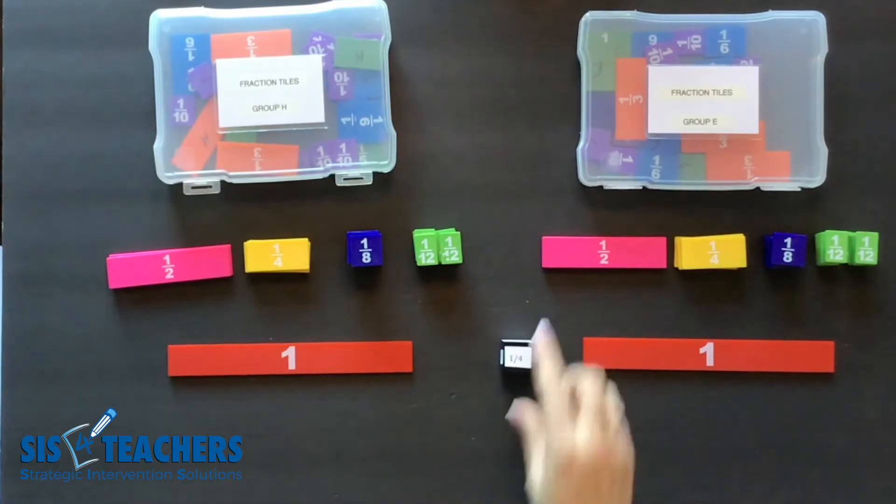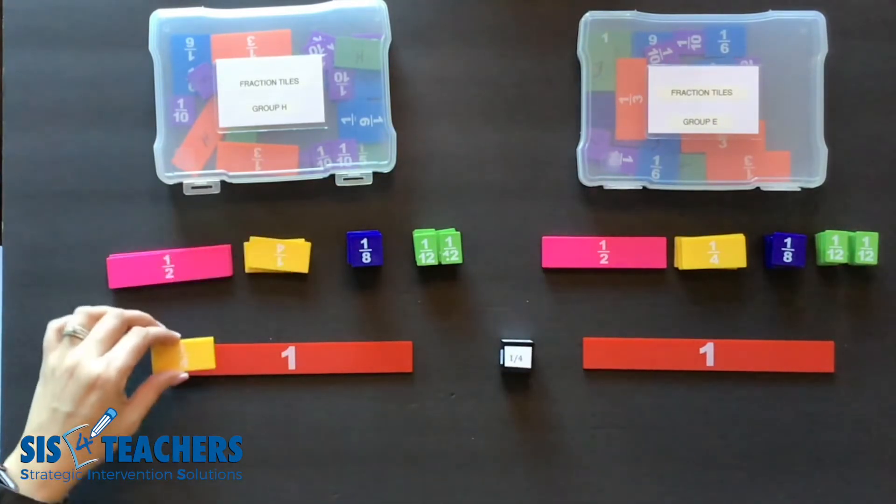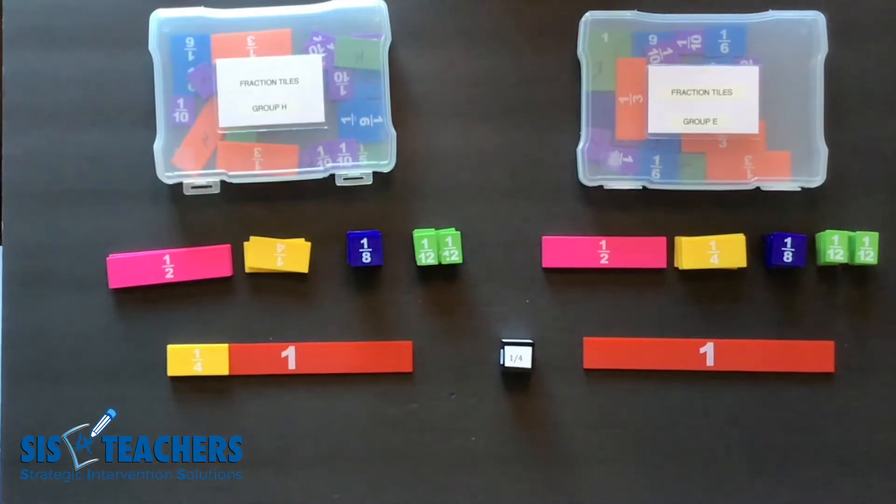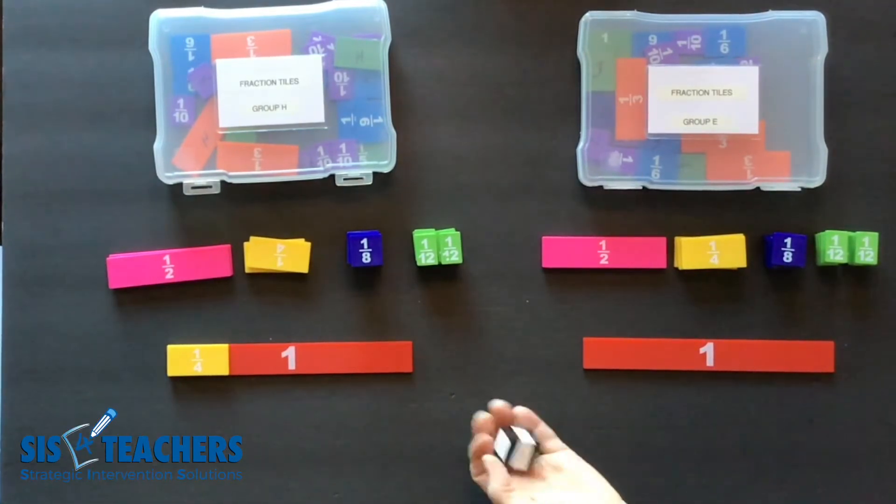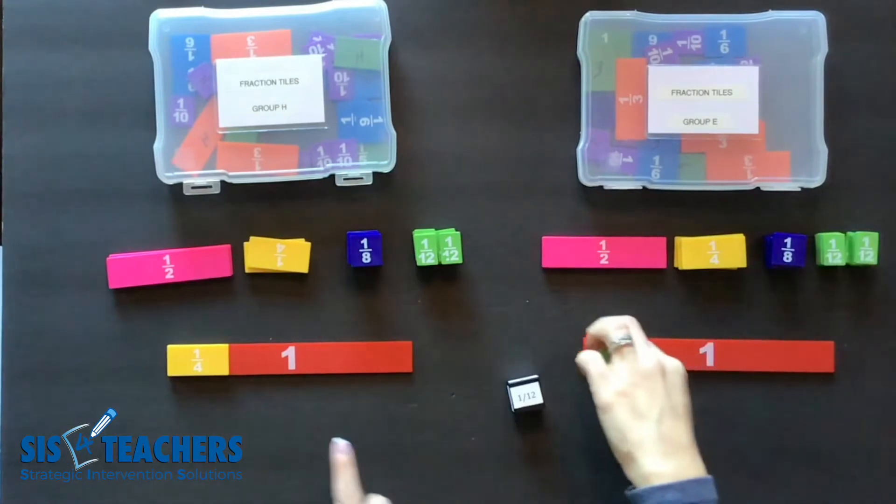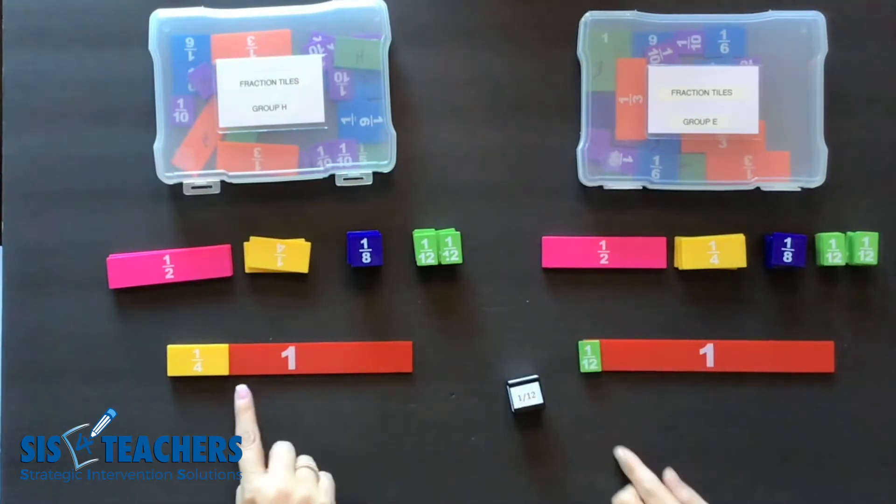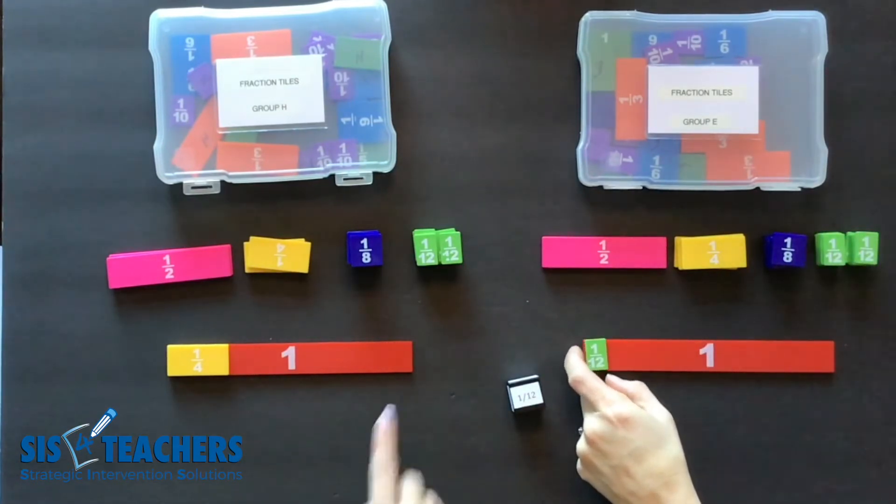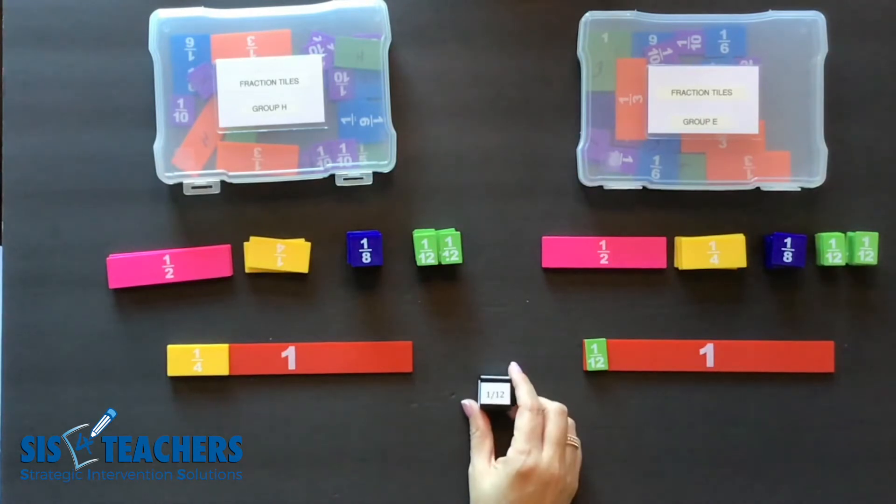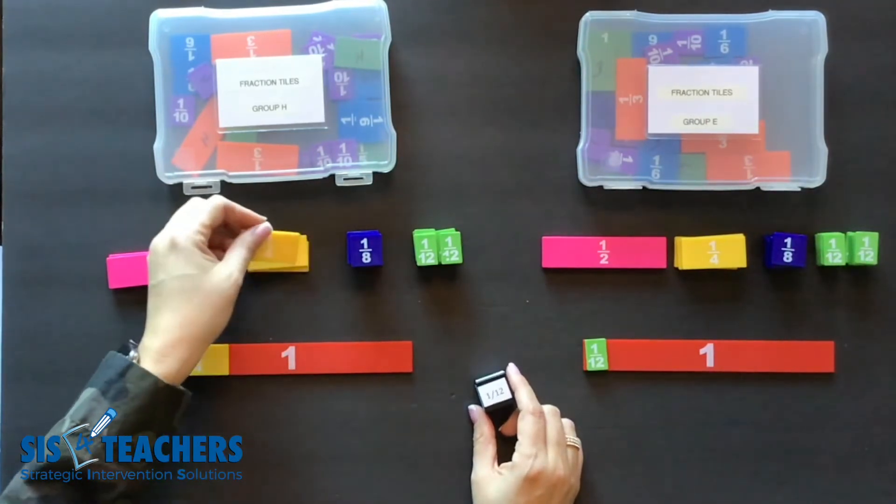So I'm going to go ahead and roll and I'm going to add one fourth. My partner is going to roll and they're going to add one twelfth. The idea is that you want to get the fraction totally full at the top. You could decide to pass if you don't want to put the fraction on it.